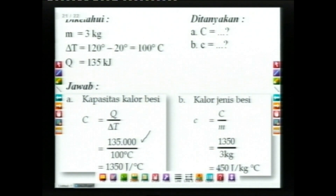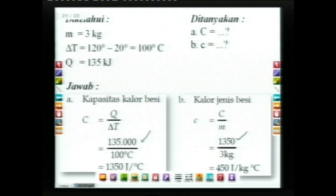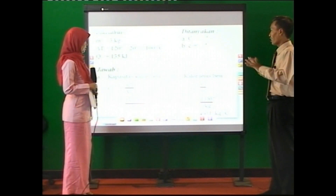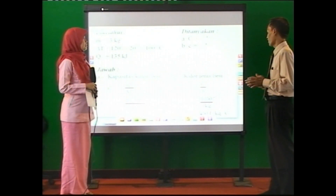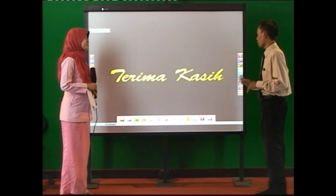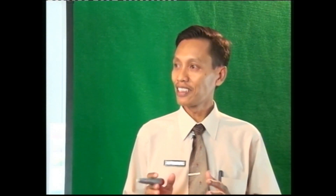Kemudian berapa kalor jenisnya? Kalor jenis C kecil sama dengan C besar (kapasitas kalor) dibagi masanya. Tadi kapasitas kalornya sudah kita hitung sebanyak 1.350, kemudian dibagi masanya 3 kilogram. Hasilnya adalah 450 joule per kilogram derajat Celcius. Ini adalah keterkaitan antara kalor, kalor jenis, dan kapasitas kalor. Semoga teman-teman di SMK bisa membedakan suhu, kalor, kalor jenis, kapasitas kalor, dan bisa mengaplikasikannya dalam kehidupan sehari-hari.